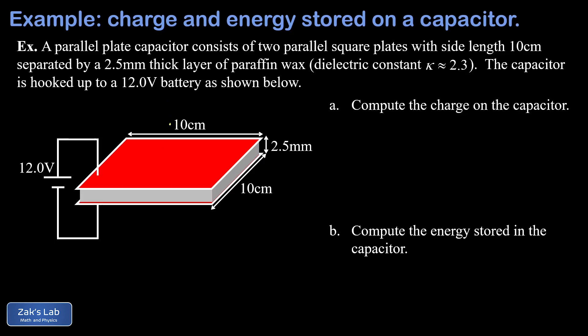These are square plates with a side length of 10 centimeters. The plates are separated by a 2.5 millimeter thick layer of paraffin wax, and we're told the dielectric constant for paraffin is about 2.3, and we're hooked up to a battery that provides a potential difference of 12.0 volts.